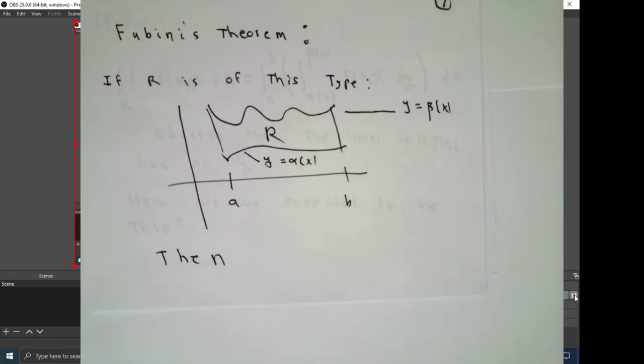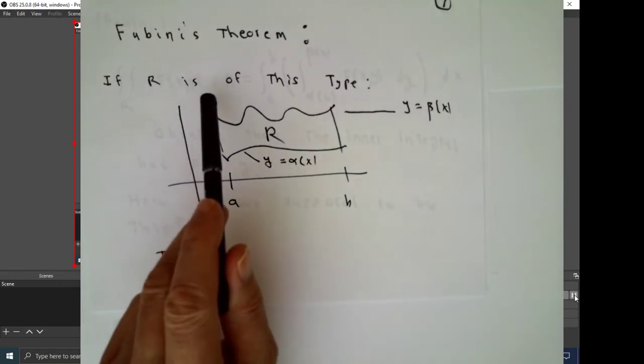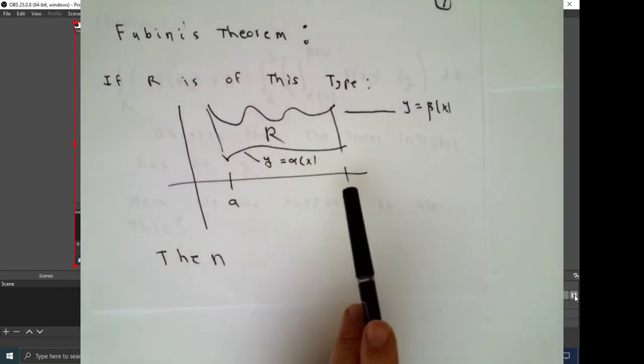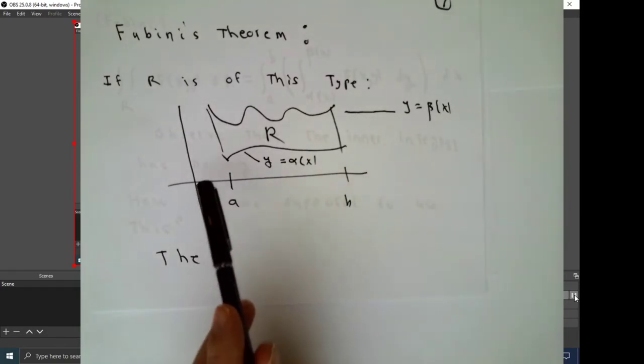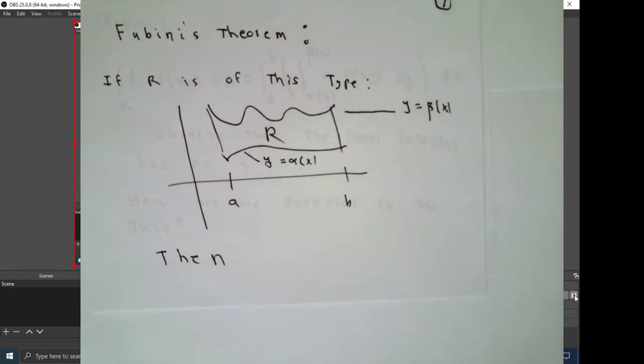This is called Fubini's Theorem. If R is a vertically simple region of the type, the x values can be anything from A to B, and the y values vary from some function alpha x to beta of x, then it's possible to calculate this double integral with an iterated integral.